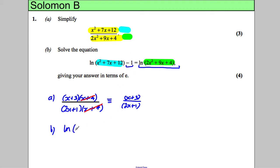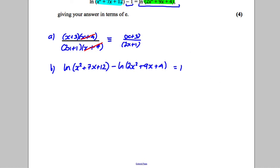Ln of x squared add 7x add 12 subtract ln of 2x squared add 9x add 4 would be equal to 1. The reason I want to do that is now I can use my log laws.